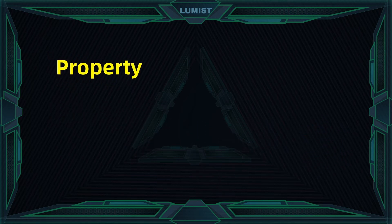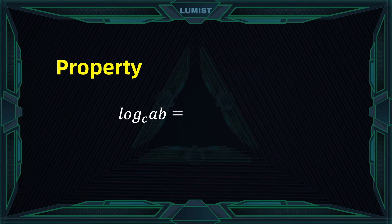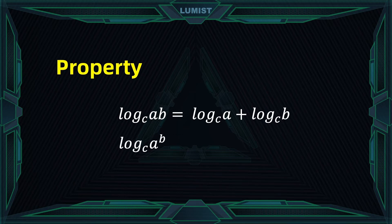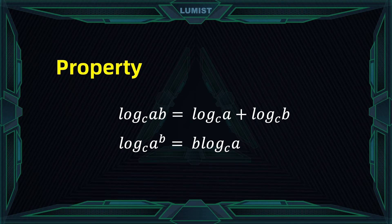Now let's use the properties of logarithm learned in high school. For example, log of (a·b) base c can be written as log of a base c plus log of b base c. Also, log of a to the power of b base c lets you bring the power over to get b times log of a base c. These tricks can help us find the derivative of functions with many powers or complicated functions being multiplied by each other.